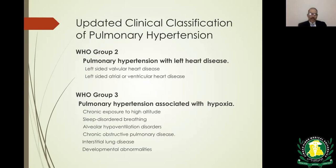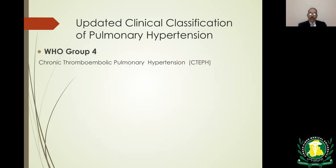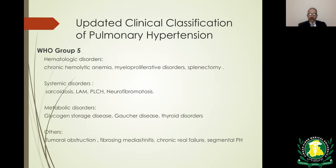WHO Group 3 covers anything related to hypoxia, whether caused by living at high altitude, advanced COPD, interstitial lung disease, or sleep apnea. Group 4 is chronic thromboembolic pulmonary hypertension, and Group 5 is a miscellaneous category.